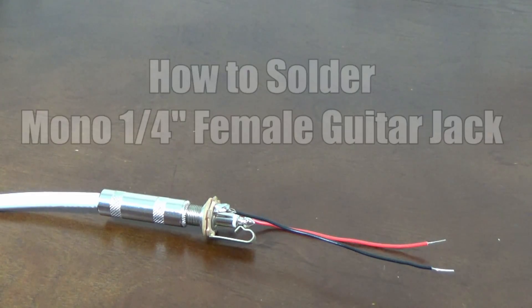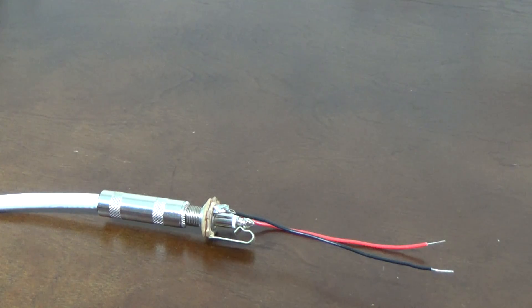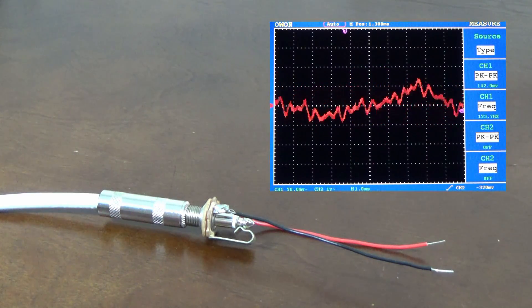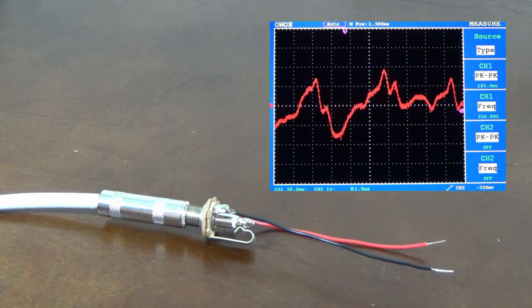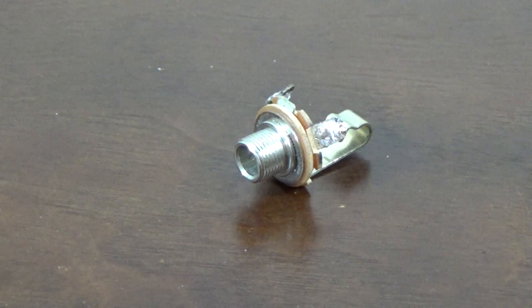Hello and welcome to this video on how we can solder the mono quarter inch female guitar jack. These quarter inch jacks are responsible for delivering the guitar signal to the amplifier. We will focus on the mono jack because stereo jacks are less commonly used. Let's get into it.